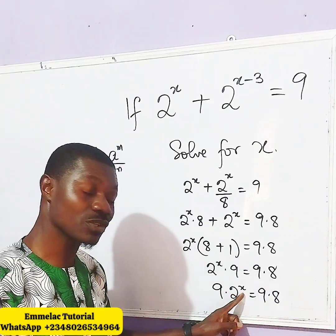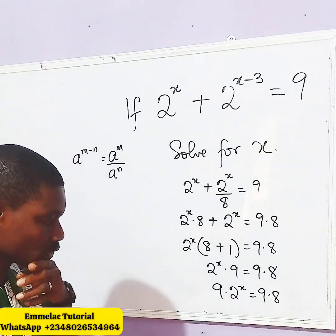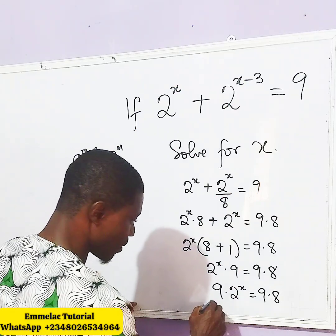So, by so doing, we can actually say x here is 3. However, let us resolve it. Divide both sides by 9.